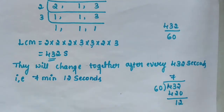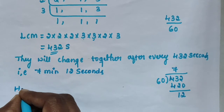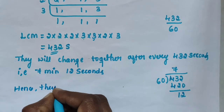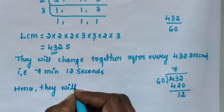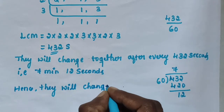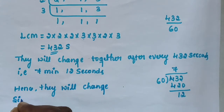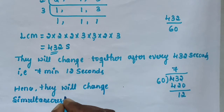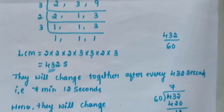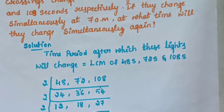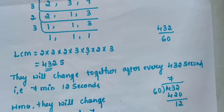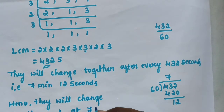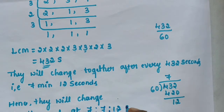Hence they will change simultaneously at 7 am plus 7 minutes 12 seconds, that is at 7 hours 7 minutes 12 seconds am. That is the answer.